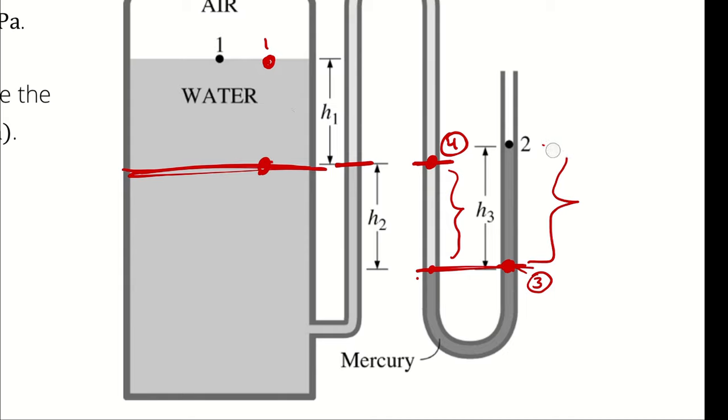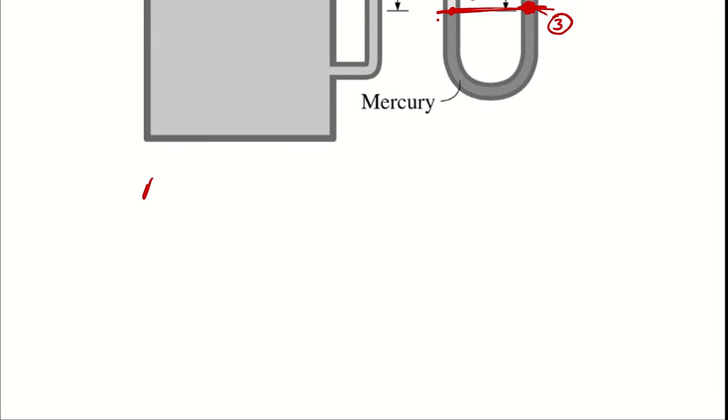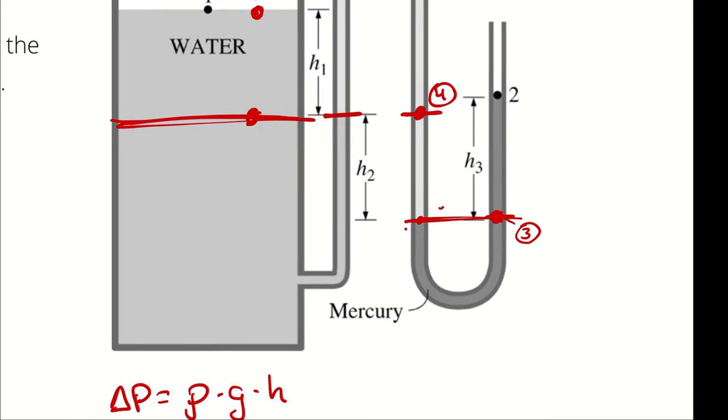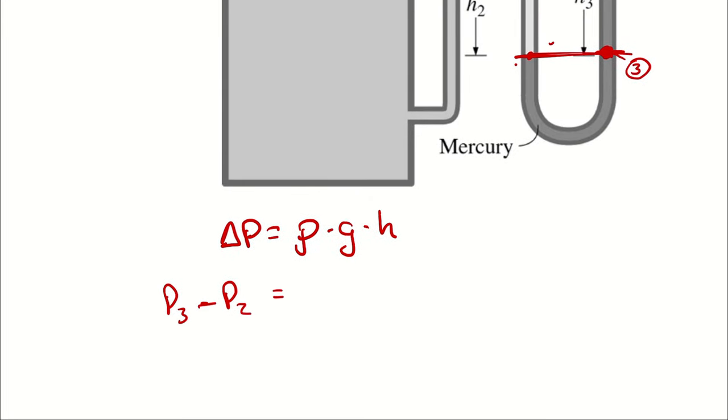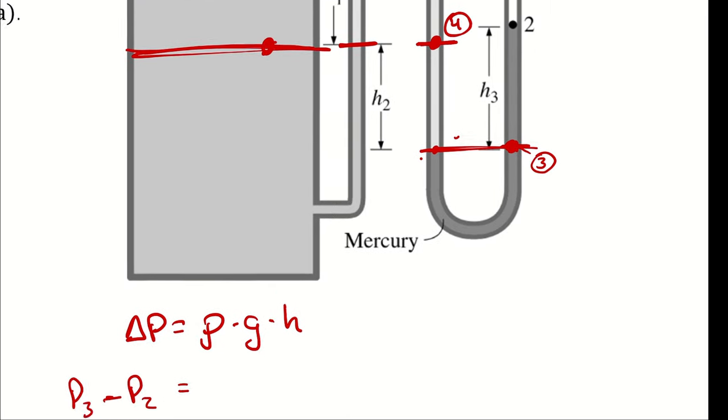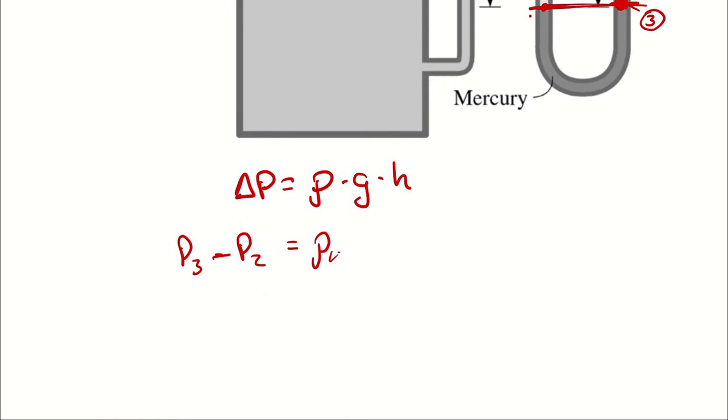The point is, we are doing three Pa equations. We are doing the Pa equation that gets us from two to three, doing the Pa equation that gets us from three to four, and then the Pa equation that gets us from four to one. And each of those is the same structure. Density times the acceleration experienced, which I'm assuming is gravity, times the height that's relevant. So the first Pa equation is between two and three. Three is going to be the higher pressure because it's lower, so I will write that as P3 minus P2. And that is going to be the density of mercury times gravity times the relevant height, which is H3.